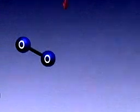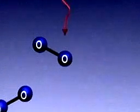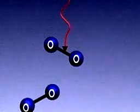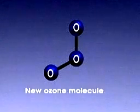Most ozone is found in the upper atmosphere, where it is produced in small amounts when the sun's high energy rays strike ordinary oxygen molecules.